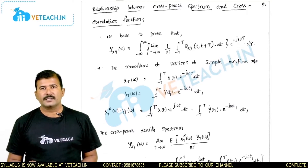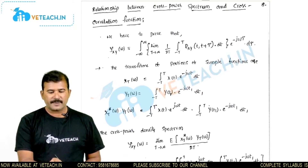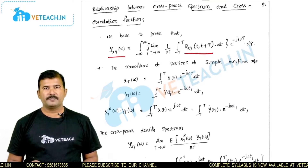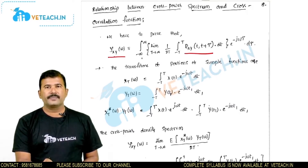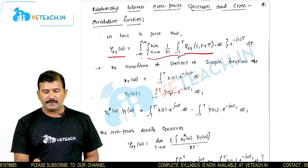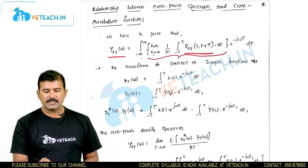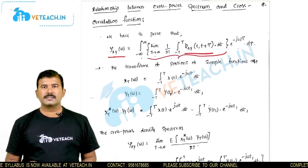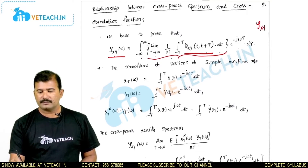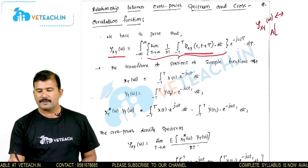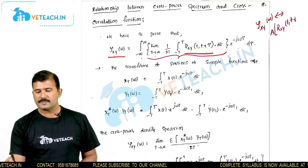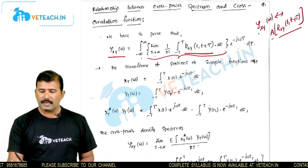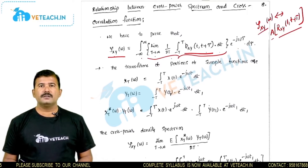As we have discussed in the properties of cross power density spectrum, the cross power density spectrum ψ_xy(ω) and the cross correlation function R_xy(t, t+τ) are a Fourier transform pair. That means ψ_xy(ω) can be expressed as the integral from minus infinity to infinity of the time average of the cross correlation function — that is, limit as T tends to infinity of 1/2T times the integral from minus T to T of R_xy(t, t+τ) times e^(−jωτ) dτ.